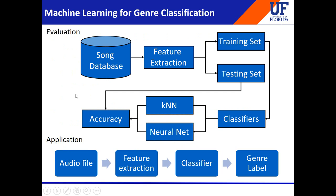This is the machine learning-based approach for music genre classification. We start with a song database from which we extract features. The extracted features are divided into a training set and a testing set. The training set is used to train our classifiers — in this case, K-nearest neighbors and neural networks — and using the testing set we find the accuracy of the classifiers. If a music genre classification system were adopted in an actual product, you would feed an audio file, extract features, and the already-trained classifier would output a genre label for various different tasks.